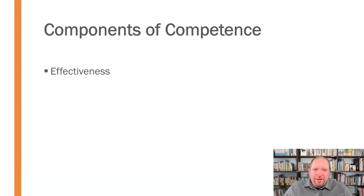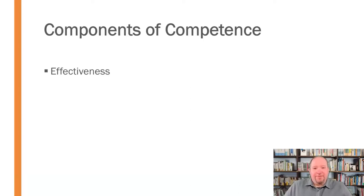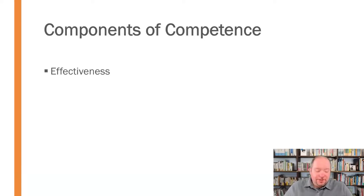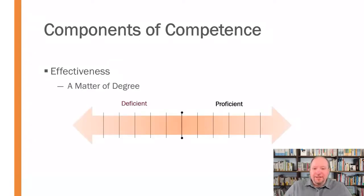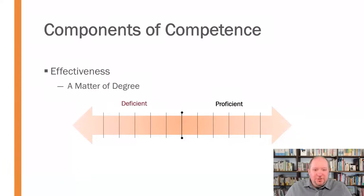First: effectiveness. What do we mean by effectiveness? Well, effectiveness is not a binary type situation. You can't just say 'I'm an effective communicator' and have that apply to everything, because most of us have blind spots as communicators. We may be more effective in some areas than others or in some contexts than others. So effectiveness is a matter of degree. You may have a great deal of proficiency in one situation, but may be deficient in another.